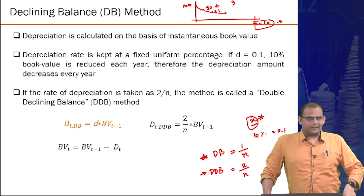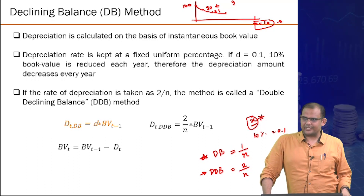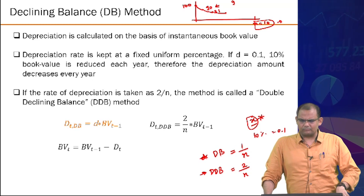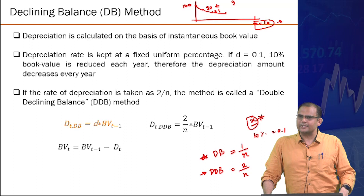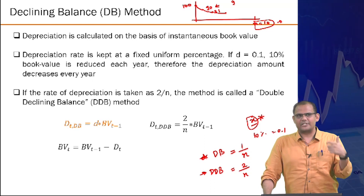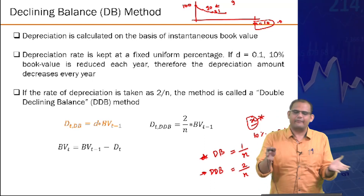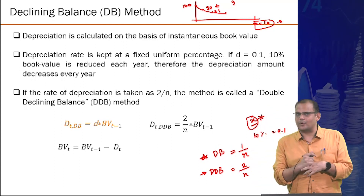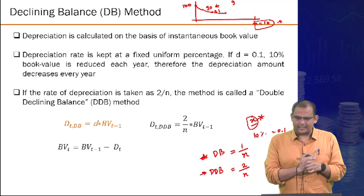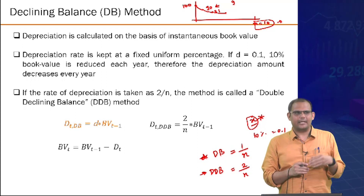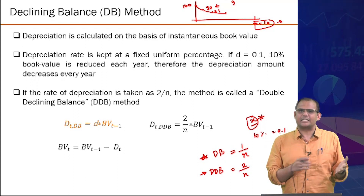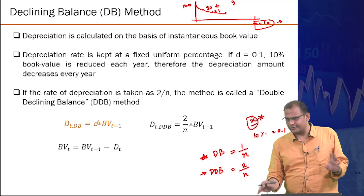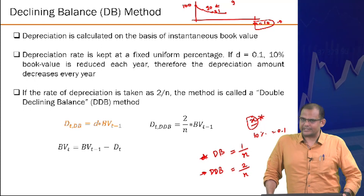Double declining balance gives faster depreciation in the beginning and is the default method in Indian taxation law. In the US, more complex formulas are used, but DDB is the basis for those newer methods. Different asset classes can have unique depreciation strategies.